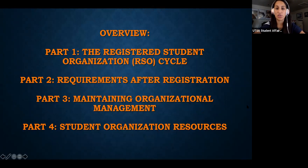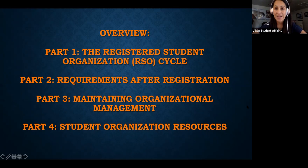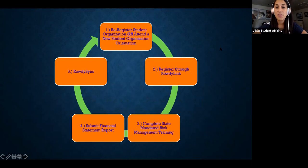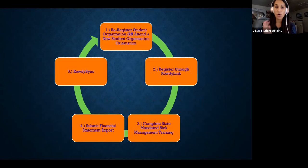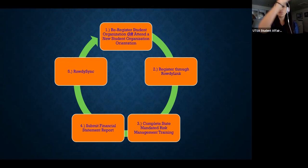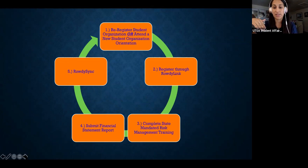The first thing we're going to talk about is the registered student organization cycle — what we consider your RSO year, what you're required to do, maintaining your active organization management, and your student organization resources that the institution offers. Whether you're a new organization or a current one, you'll either attend a new student organization orientation or start at Rowdy Link. You'll register, complete your state mandated risk management training annually, submit your financial statement report, and then end the year completing Rowdy Link — and then start that over.